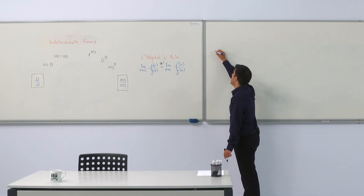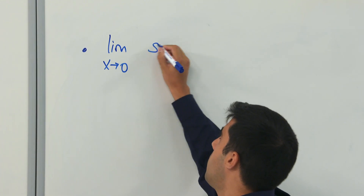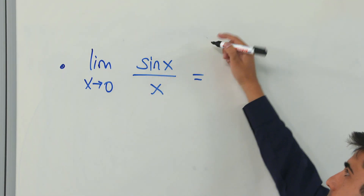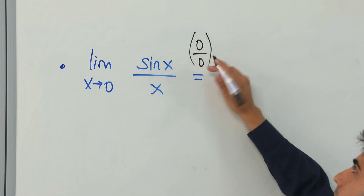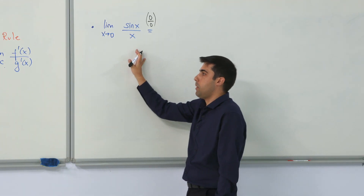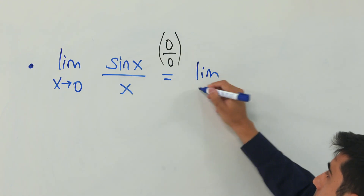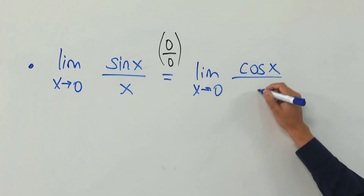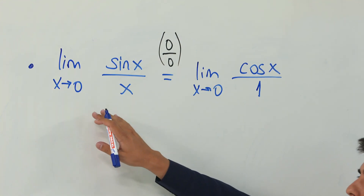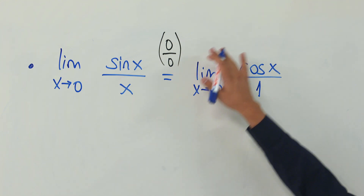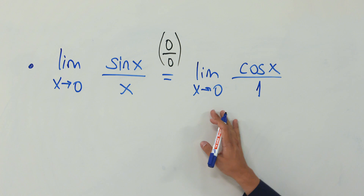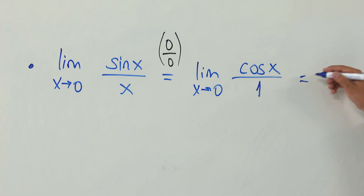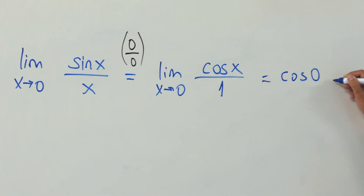Let's see some examples. The first example is the limit as x goes to 0 of sin(x) over x. As x goes to 0, sin(0) is 0 and x goes to 0, so we have the indeterminate form 0 over 0. We may apply L'Hôpital's rule, which gives us the limit as x goes to 0 of the derivative of sin(x), which is cos(x), divided by the derivative of x, which is 1. Note that when applying L'Hôpital's rule, we take the derivative of the numerator and denominator separately — we are not taking the derivative of the quotient. So when x goes to 0, cos(x) goes to cos(0), which is 1.